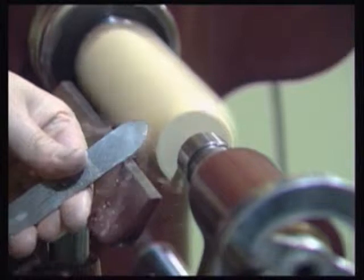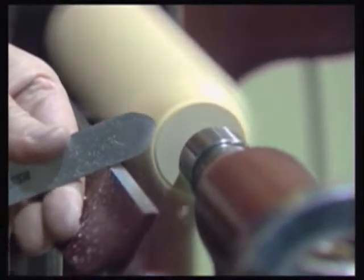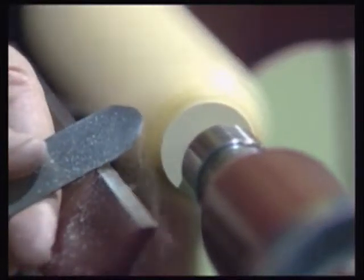In this sequence we use the tool to cut across end grain, taking a series of light cuts to round over one end of this square stock.